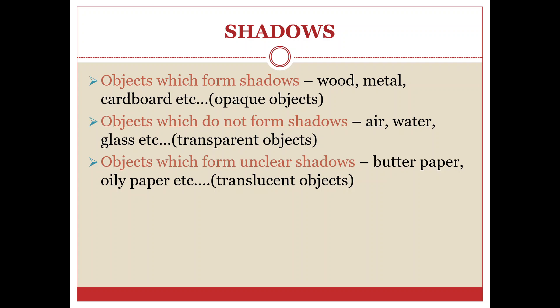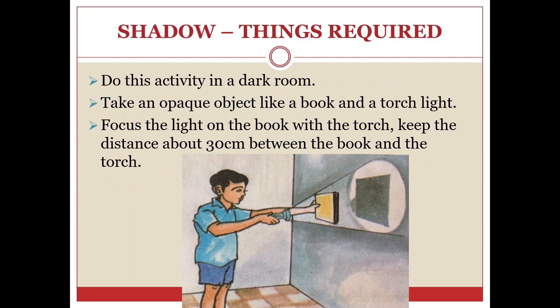Objects which do not form shadows, like air, water, glass etc., are transparent objects. And objects which form unclear shadows, like butter paper and oily paper, are translucent objects. Thus we see that all objects do not form shadows — only opaque objects form shadows.